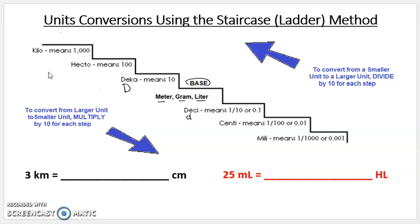We're going to convert 3 kilometers to centimeters. Now, a kilometer is at the top. When you use the staircase method, every step is a factor of 10. So we're going to multiply if we go from kilometers to centimeters.